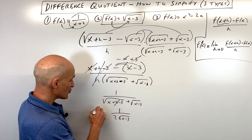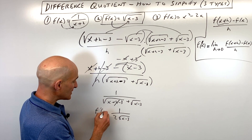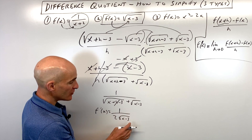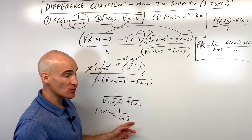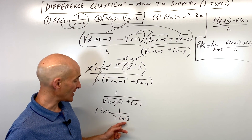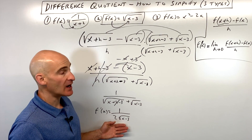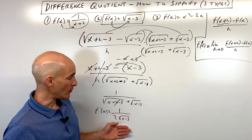That's your derivative. If you want to take it further, you can rationalize by multiplying numerator and denominator by square root of x minus three, but we'll leave it there for now.